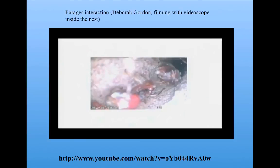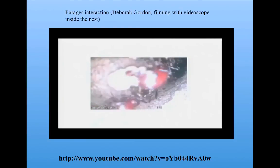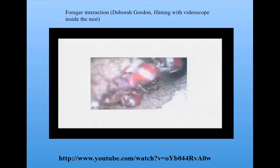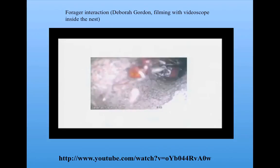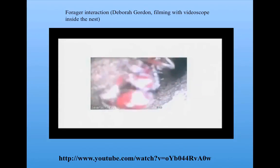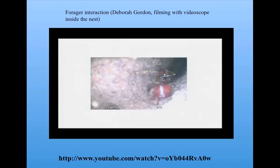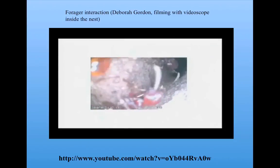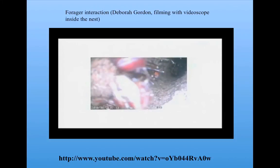If ants coming out of the nest sense many foragers coming back with food, then they will be more likely to adopt the task of being a forager. So ants act as little statisticians — they measure the rate of interaction of the ants they encounter doing different tasks, and those rates are one of the things they use to decide what task to adopt. It's not known how the brain of an ant is able to do this, but the data from Gordon and her research collaborators suggest that is exactly what the ants are somehow doing.